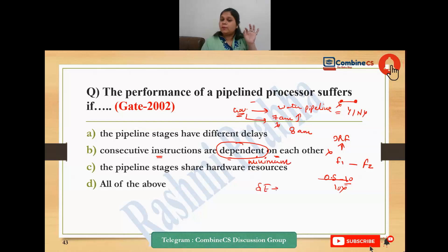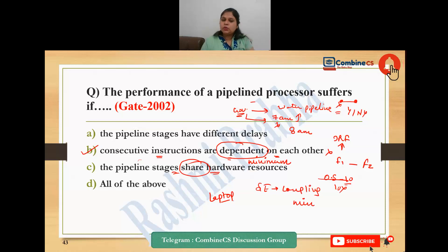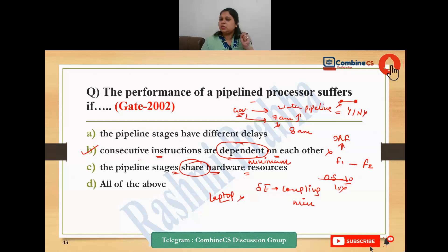The second point is true. The next option: pipeline stages share hardware resources. Like if I am making a video using a laptop and a friend also needs that same laptop - while I am using it, it affects them. So when hardware resources are in sharing mode, you have to wait for it, and again the point is true. Sharing hardware resources creates performance problems in the pipeline.